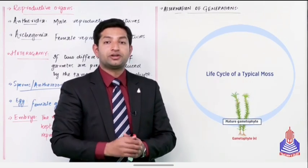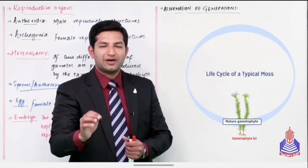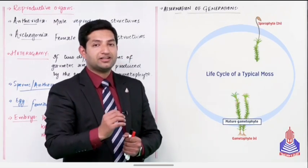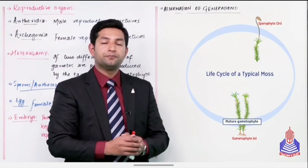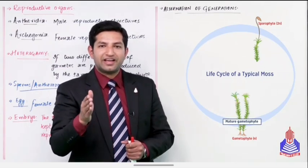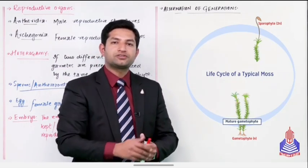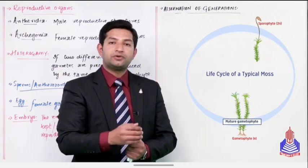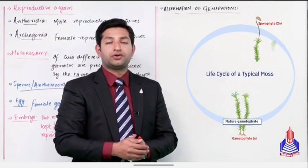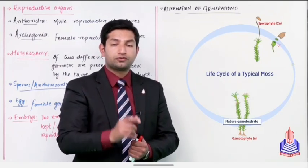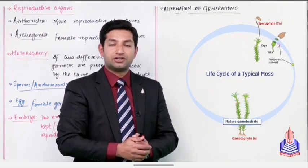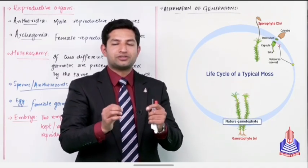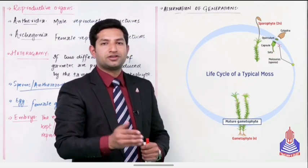One is the gametophyte generation that is genetically haploid. And the other is sporophyte generation that is genetically diploid. So this means that if a haploid gametophyte generation reproduces, a diploid sporophyte generation is produced. And when the diploid sporophyte generation further produces spores through the process of meiosis and reduction division, what will happen here students is meiosis.